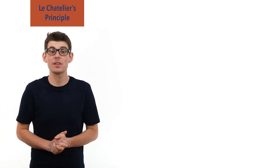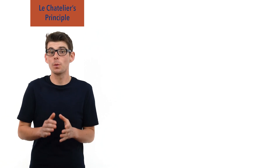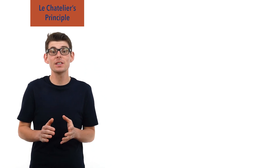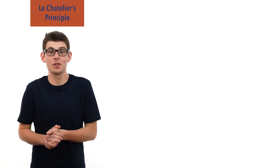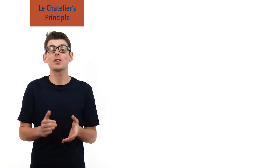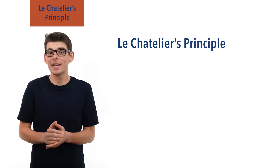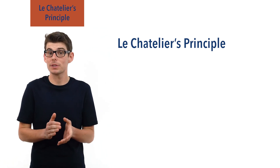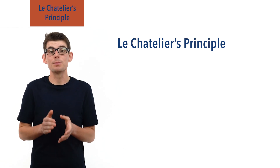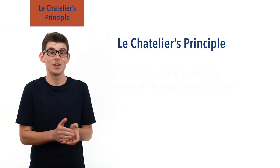In the 19th century, a French chemist called Henri-Louis Le Châtelier observed that when a system at equilibrium has a change made to it, the system will adjust itself to counter the change made. This observation formed the basis of what we now call Le Châtelier's Principle. There are slightly different ways it is written, but Le Châtelier's Principle states that if a homogeneous system in equilibrium is subjected to a change, processes will occur which tend to counteract the change imposed.